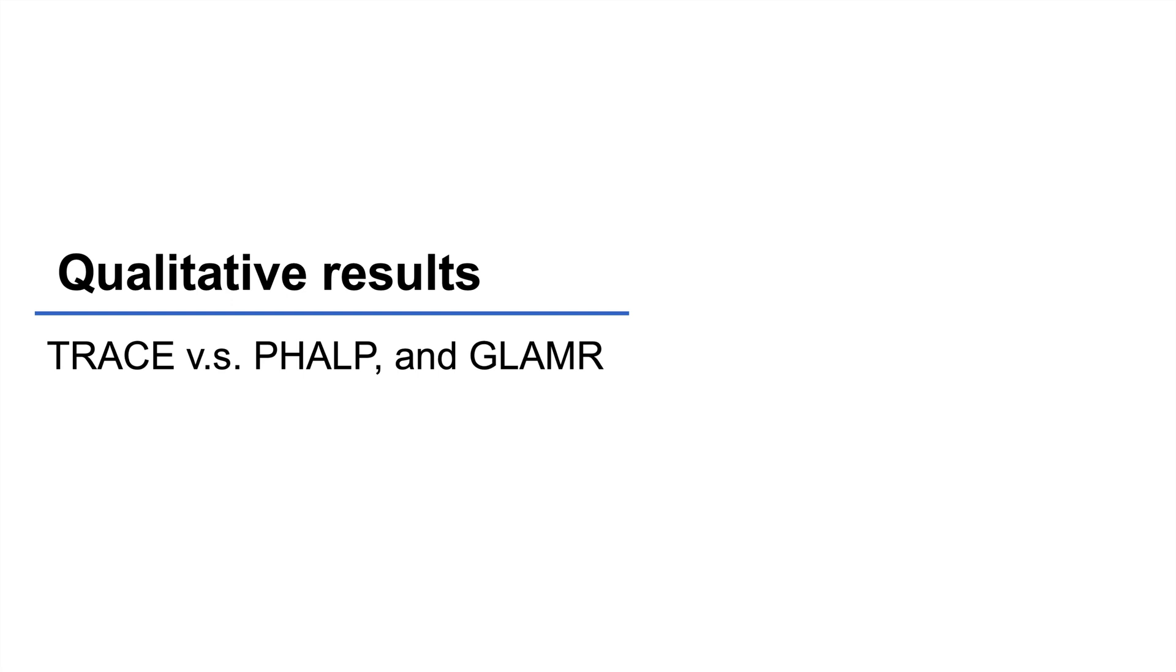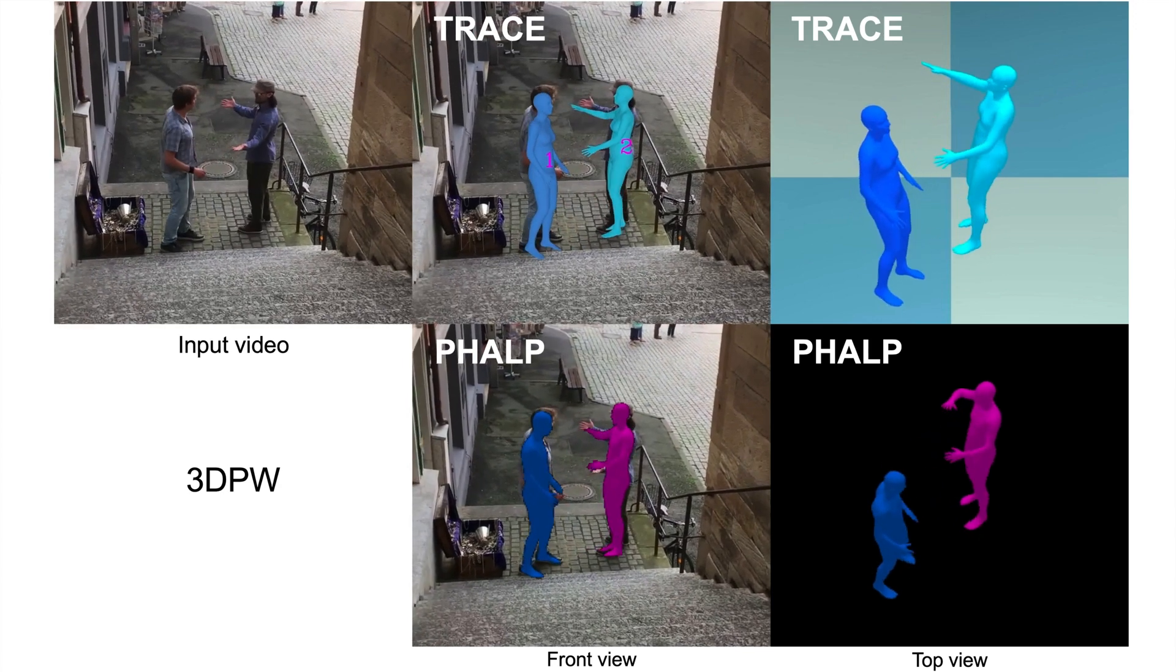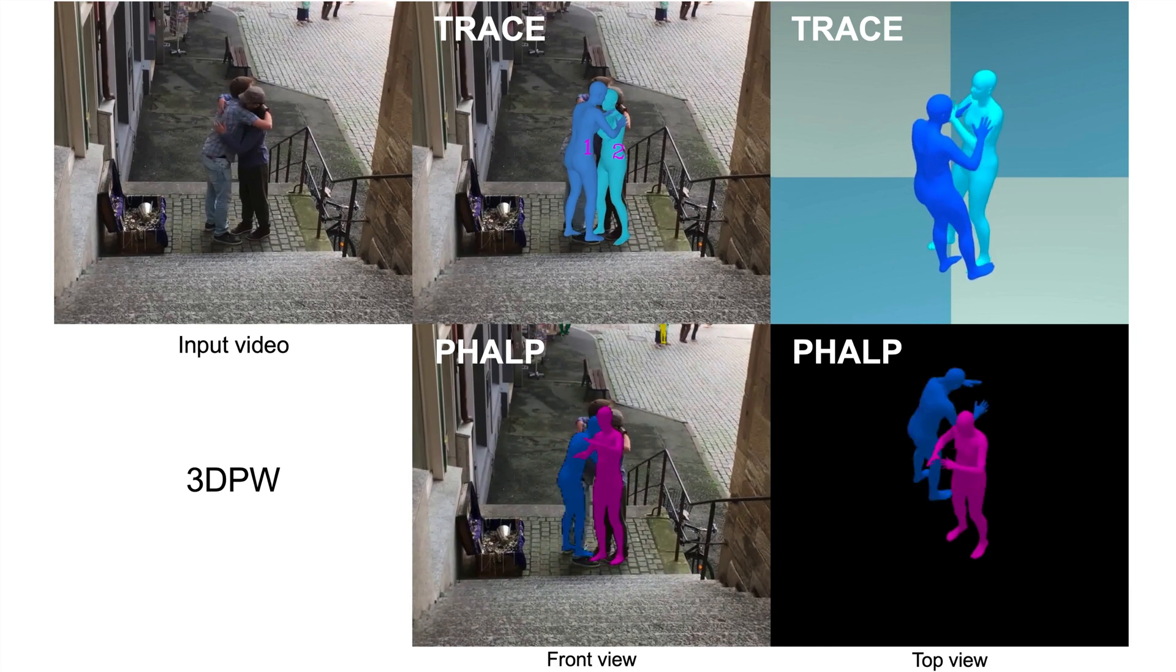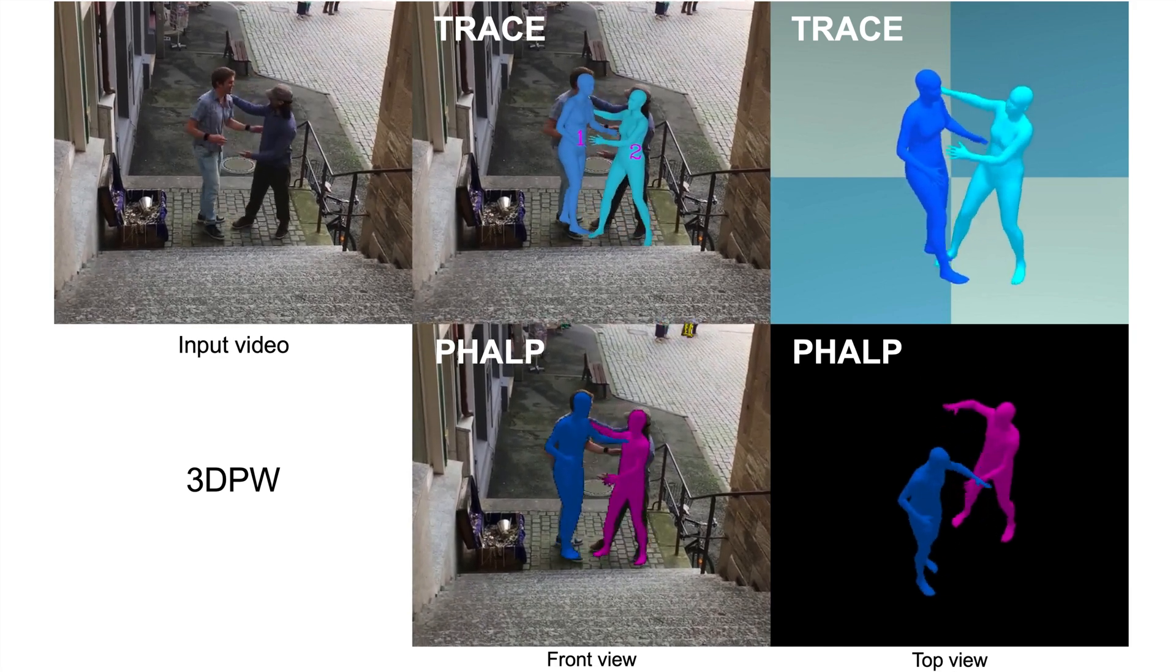Here we provide qualitative comparisons between TRACE, PAP, and Glamour. Notice that when there is person-person occlusion, PAP loses tracks while TRACE is able to maintain the subject identities.